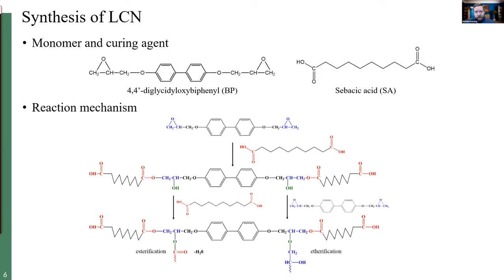The second step involves a cross-linking reaction through the hydroxyl groups formed in the previous step. These can react either with the carboxylic acid through an esterification reaction, or with epoxy through an etherification reaction. The chemical bond formation during this step was shown to depend on the stoichiometric ratio between the biphenyl and sebacic acid, which greatly influenced the liquid crystallinity and network structure. We looked at different ratios of epoxy to diacid — specifically BP to SA ratios of 0.5, 0.7, and 1.0 — as a tool to tune the thermomechanical properties.